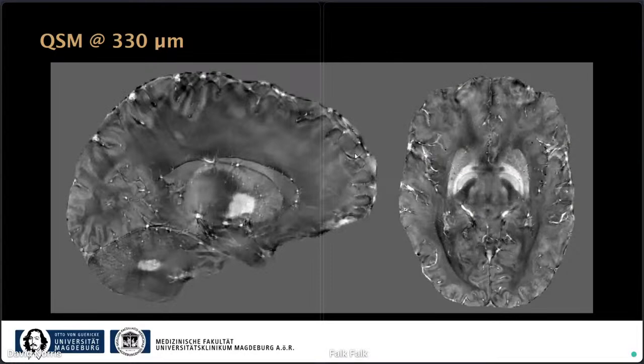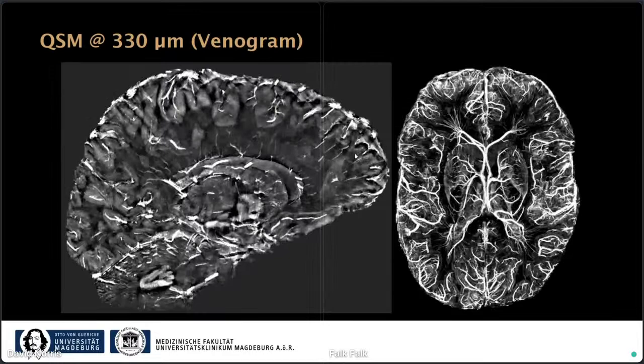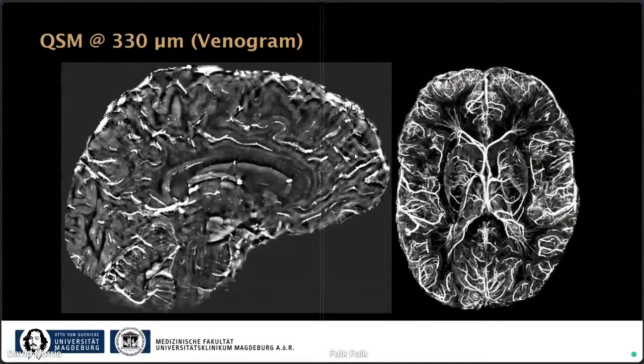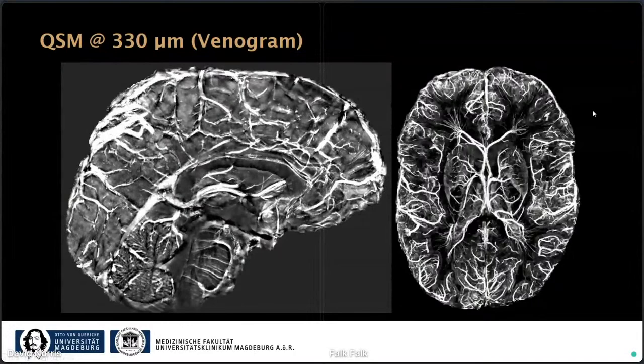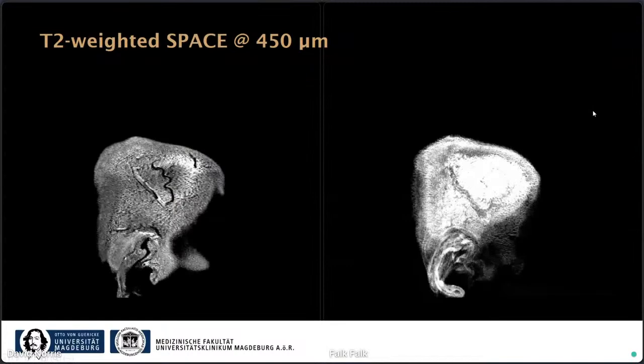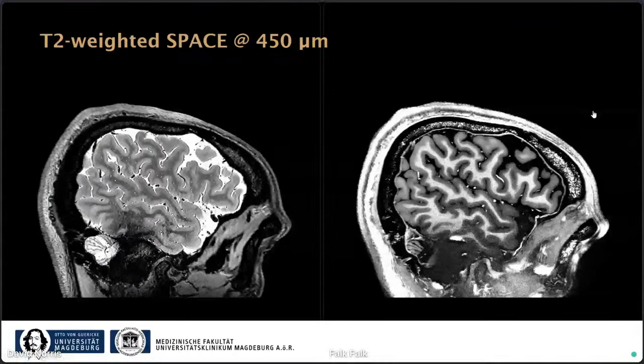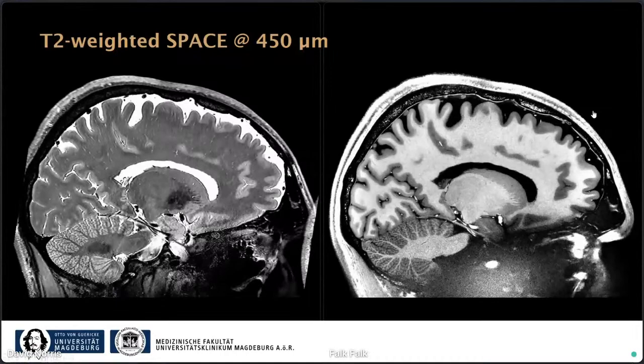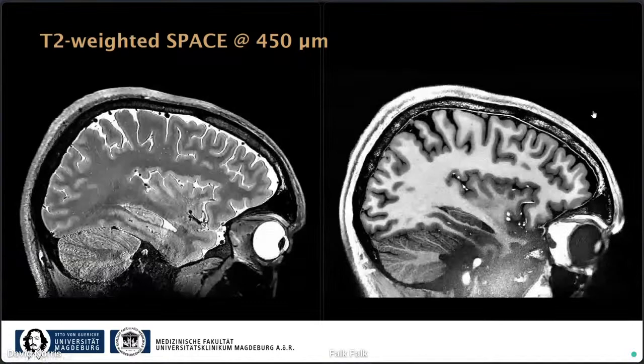The human phantom also includes a QSM dataset at 330 micron isotropic resolution, providing additional contrast beyond the T1-weighted image. Based on the QSM we built a venogram — on the left you can see slices through the sagittal plane and on the right a maximum intensity projection showing the venous system of the brain in great detail. We also have a T2-weighted SPACE sequence at 450 micron isotropic resolution, shown side by side with the T1-weighted image, adding complementary contrast information.